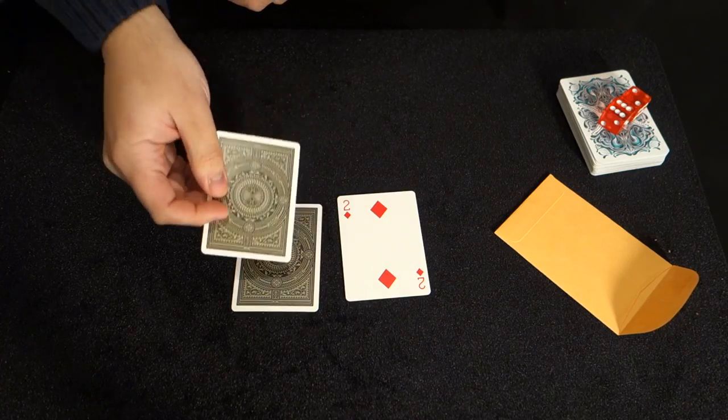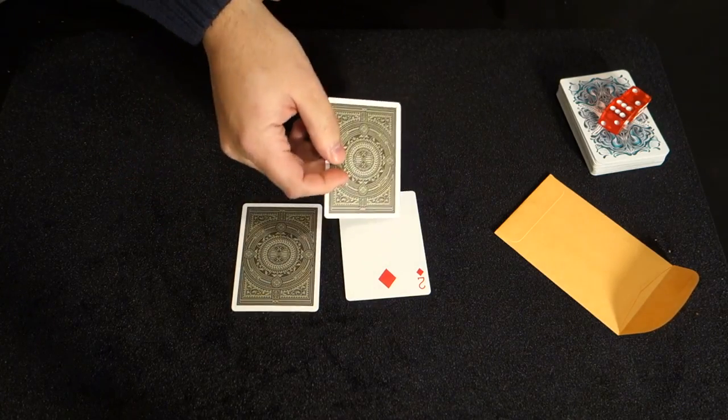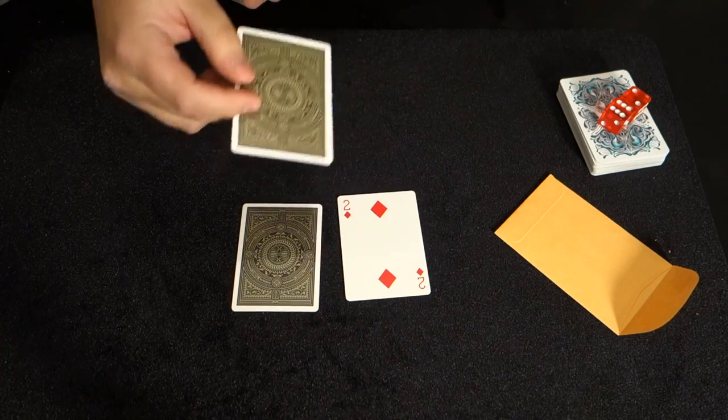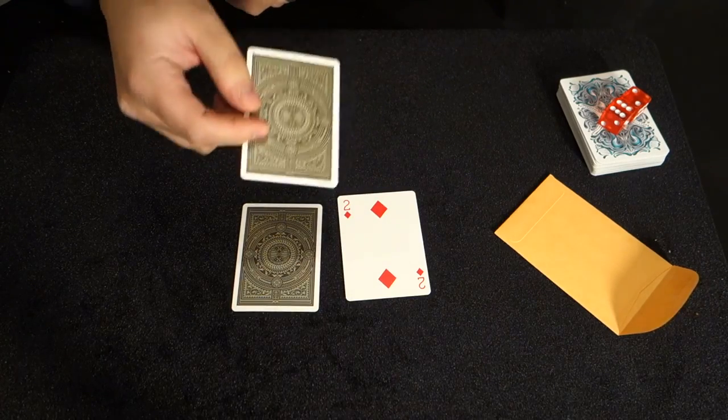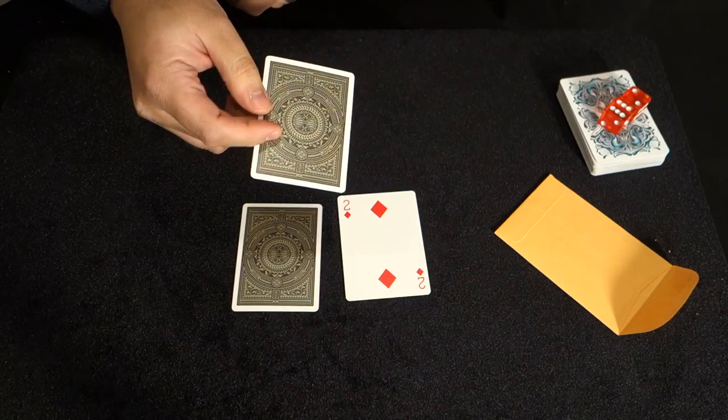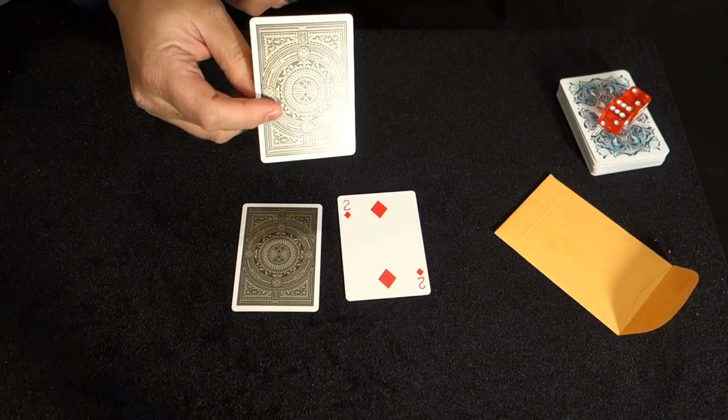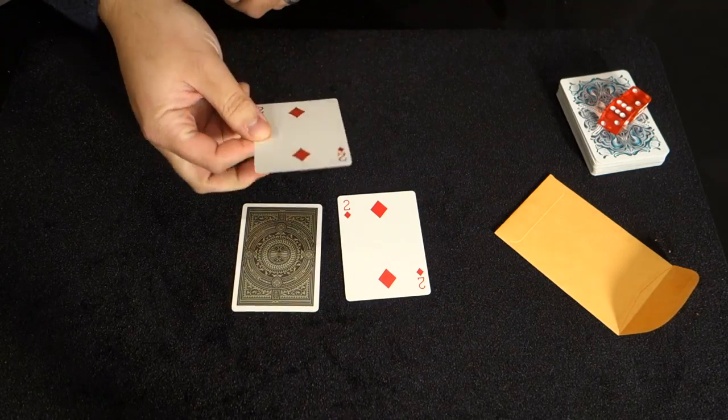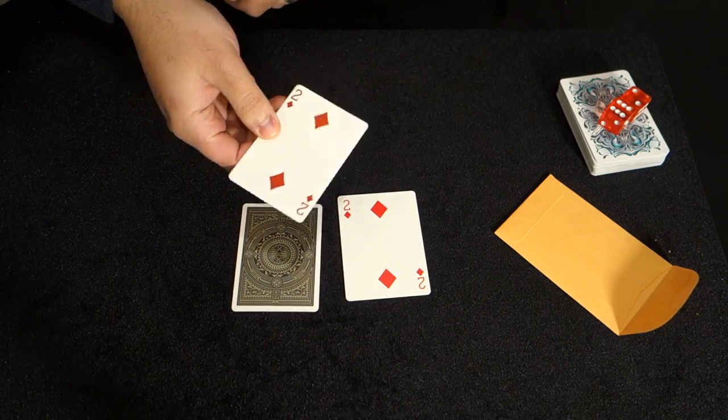But if I were to get the back and the value correct, that double prediction, the odds jumped to one in over 2,700. I'd say that's a miracle. And sometimes miracles can happen.